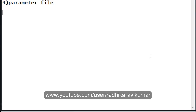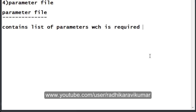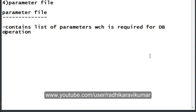Now let us move on to the parameter file. A parameter file is also very simple — it is the file that contains all the list of parameters required for our database operation.